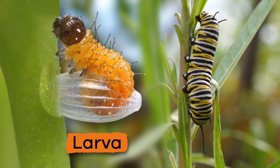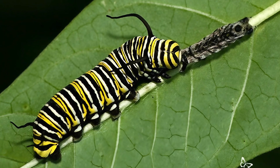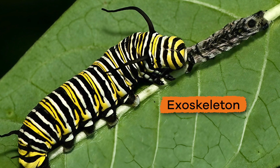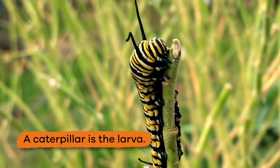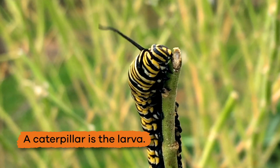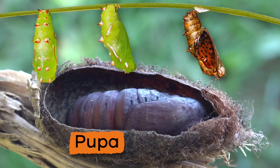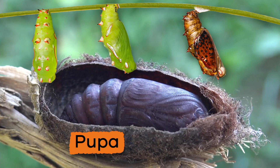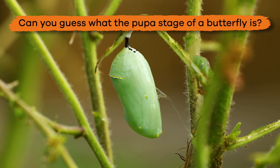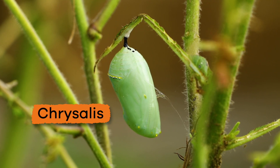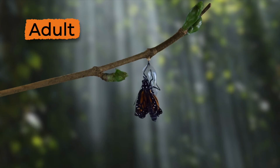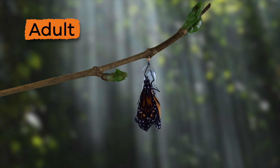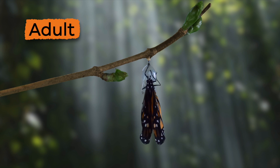Here is a butterfly egg. Next up is larva. This stage happens when the egg hatches. Larvae molt, or shed their skin, and have an exoskeleton. If we're looking at the life cycle of a butterfly, a caterpillar is the larva. Pupa is an inactive or resting stage where the insect's body transforms. Can you guess what the pupa stage of a butterfly is? If you said chrysalis, you're right!